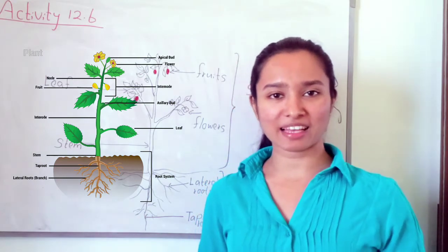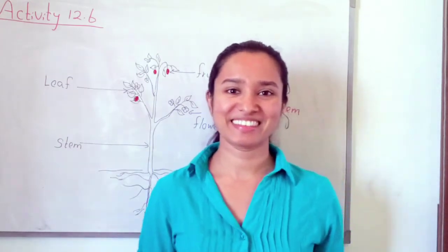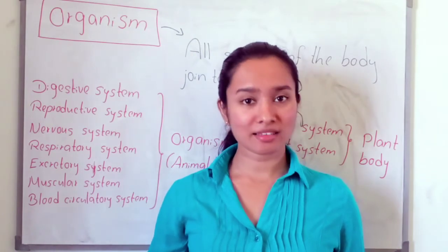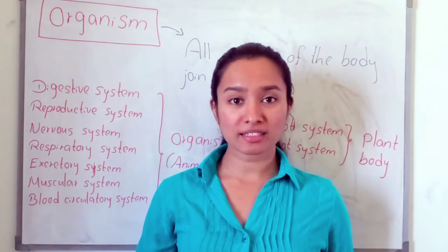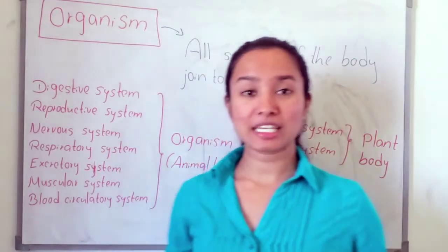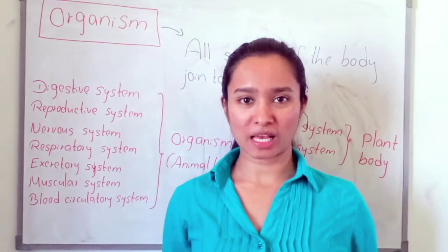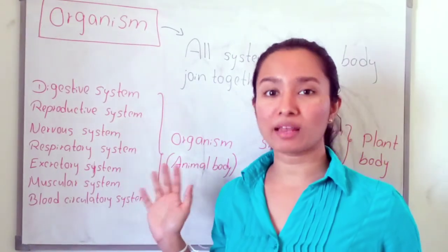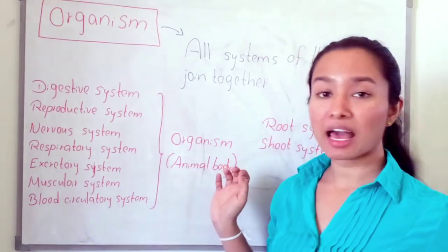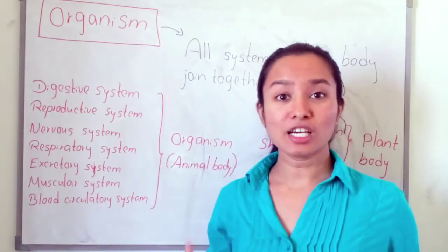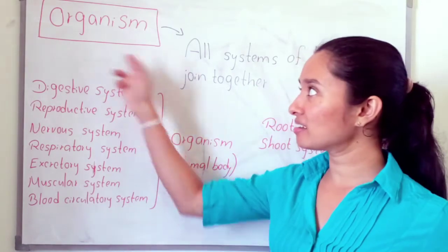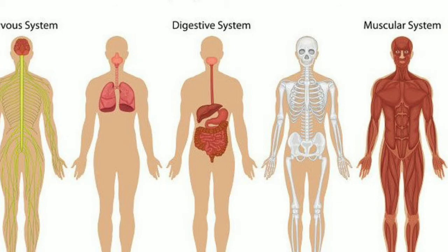The last and most complex organizational level is the organism, called 'GBR' — it can be an animal or a plant. All the systems of our body join together to make an organism.